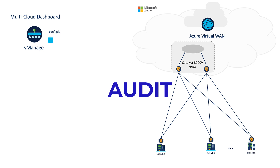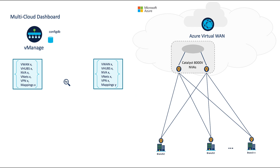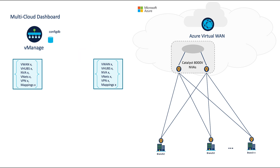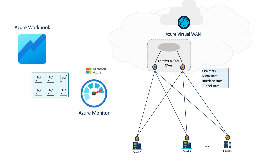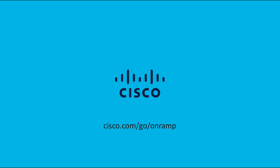VManage can also perform periodic and/or ad hoc audits where it compares its configuration with that of Azure. If it notices discrepancies between the configurations due to inadvertent changes, VManage will report on the out-of-sync items, suggest remediation steps, and can even perform those actions for us. Our cloud gateways can also natively send telemetry data to Azure Monitor. This data can then be aggregated and sent to Azure Workbooks where it can be further analyzed to assist with setting long thresholds, baselining, trend analysis, and troubleshooting. This concludes our video on Cloud OnRamp for Multicloud with Azure Virtual WAN. If you'd like to try this yourself, we do have a hands-on sandbox demo that does not require an Azure subscription nor Cisco licensing. Please see the link below. Thank you for watching.